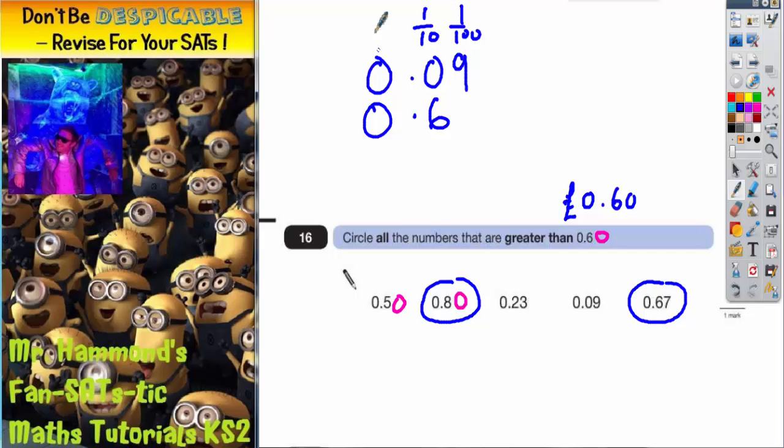So this means no units, no tenths and nine hundredths. This means no units, six tenths and no hundredths. And 0.60 is bigger than 0.09. So just be careful about that.